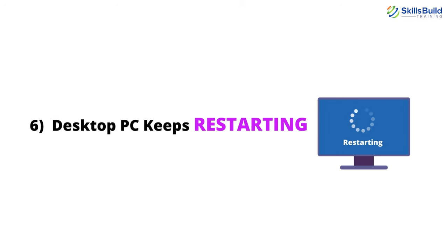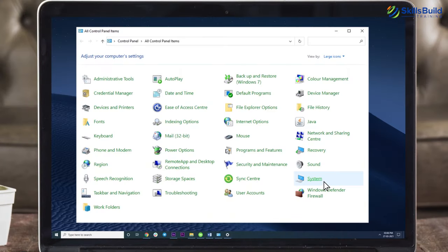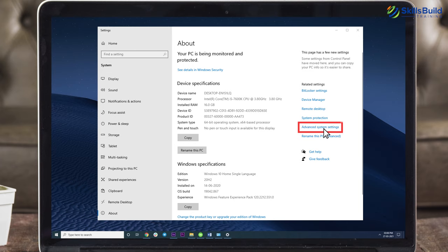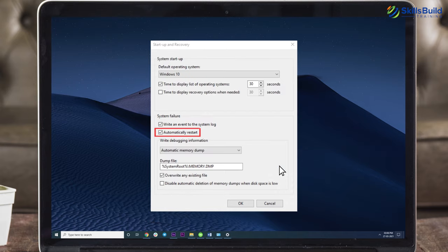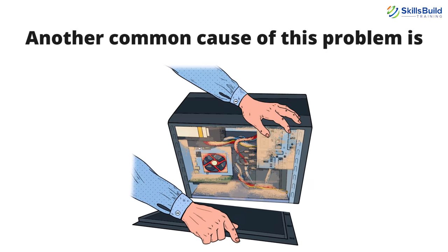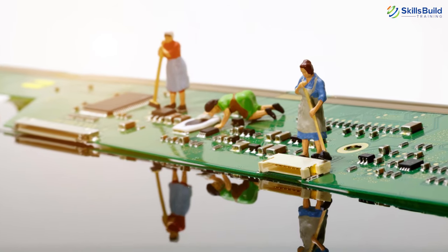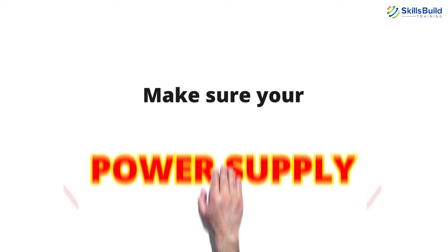Number 6: Desktop PC Keeps Restarting. A computer that keeps restarting is a problem faced by many PC users. Go to Control Panel, System, System Properties, and click on the Advanced tab. Under the Startup and Recovery option, click the Settings button and uncheck the Automatically Restart option. Another common cause of this problem is dust and heat — make sure your CPU, motherboard, RAM, hard drive, and other components are clean and your fans are working. Try opening the case of your desktop PC to let heat exhaust. Also make sure your power supply is working correctly, as insufficient power can cause a restarting loop.